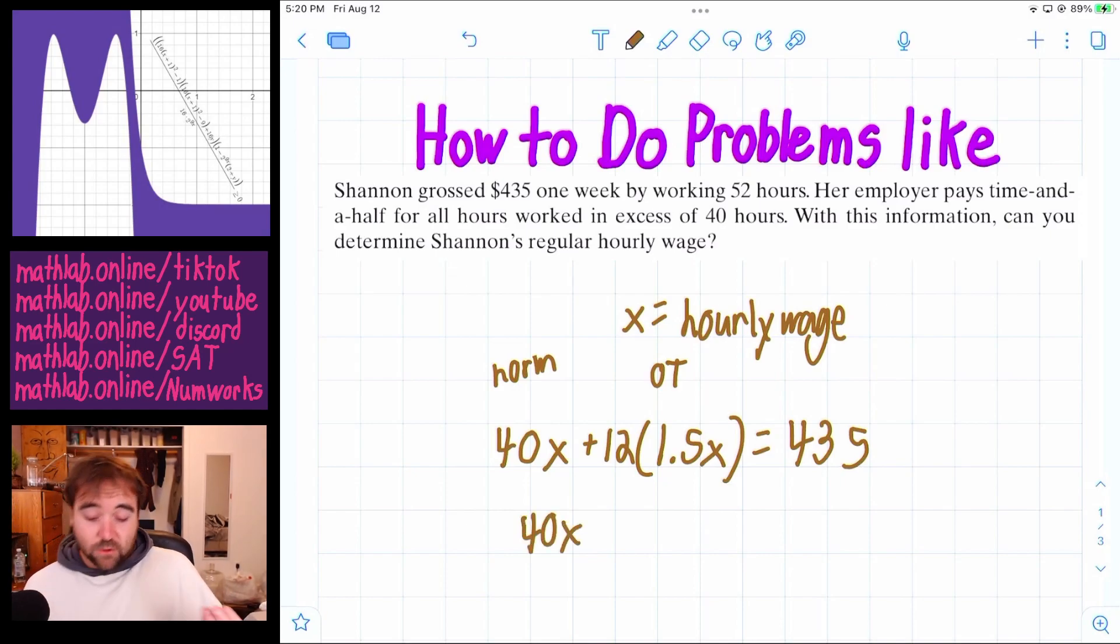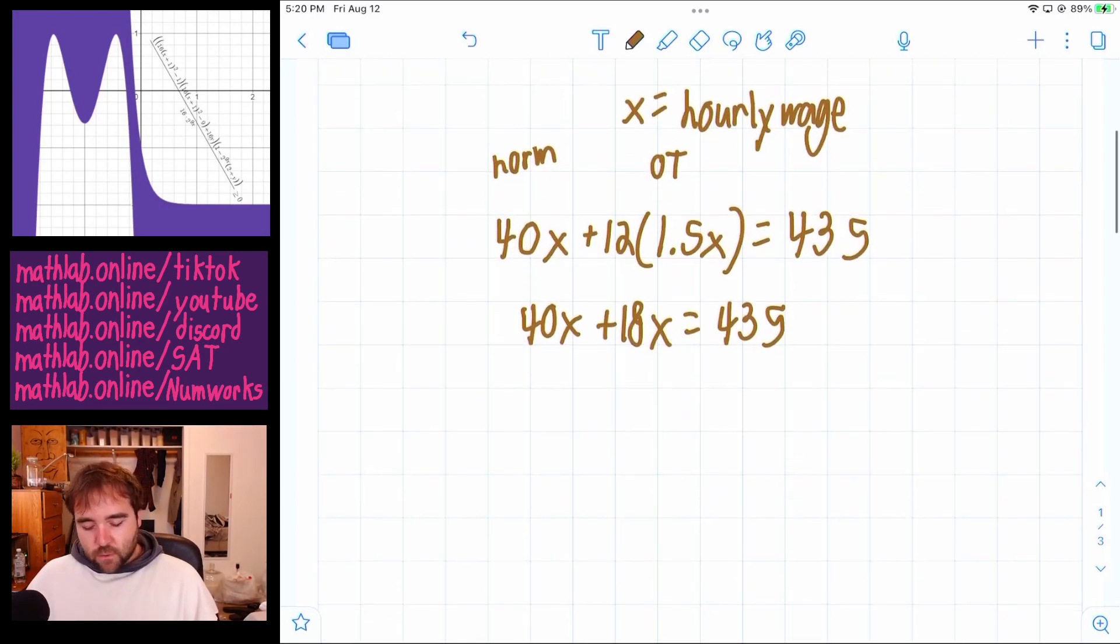We got 40x. We're going to distribute. So 12 times 1.5, well it's 12 times 1 and then 12 times 0.5, so that's 18x. So 58x equals 435.